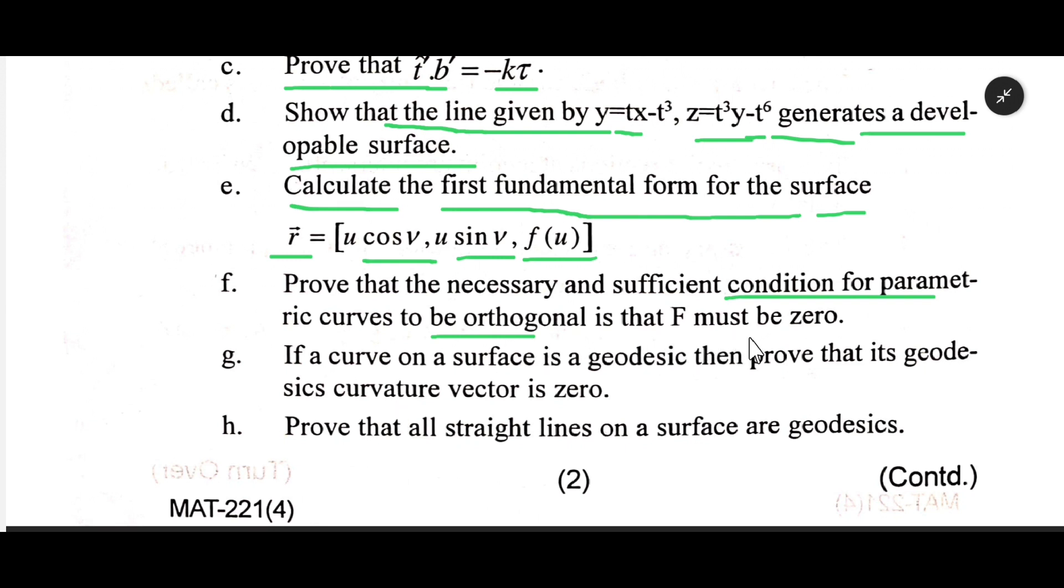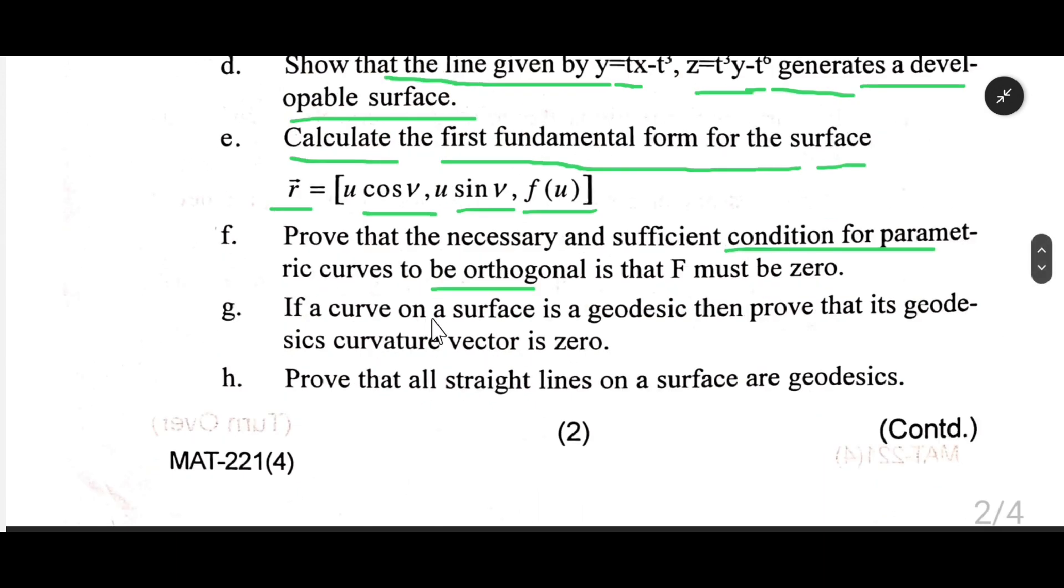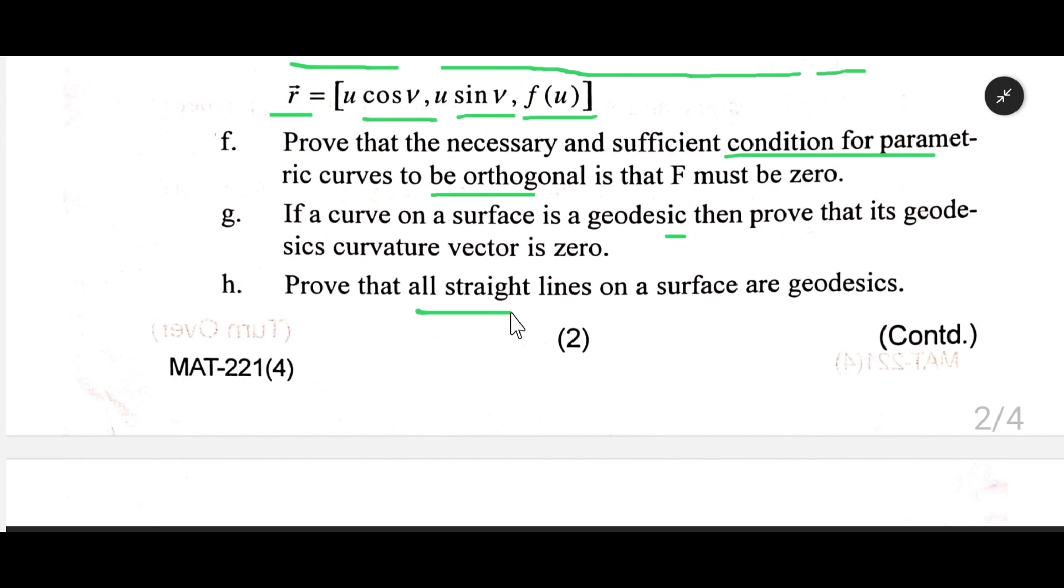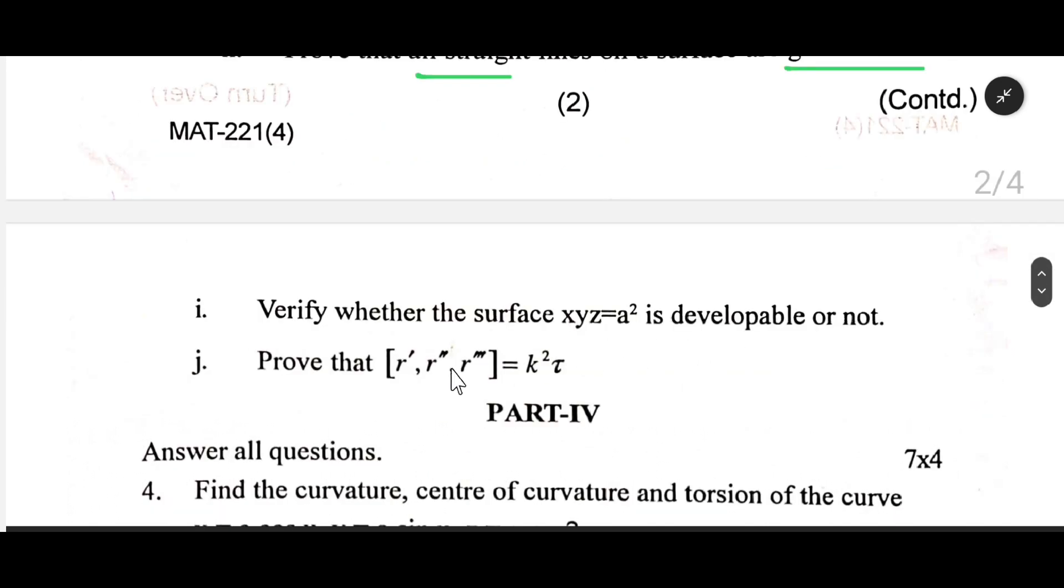If a curve on a surface is a geodesic, then prove that its geodesic curvature vector is zero. Prove that all straight lines on a surface are geodesics. Verify whether the surface xyz = a² is developable or not. Prove that [r⃗', r⃗'', r⃗'''] = k²τ.